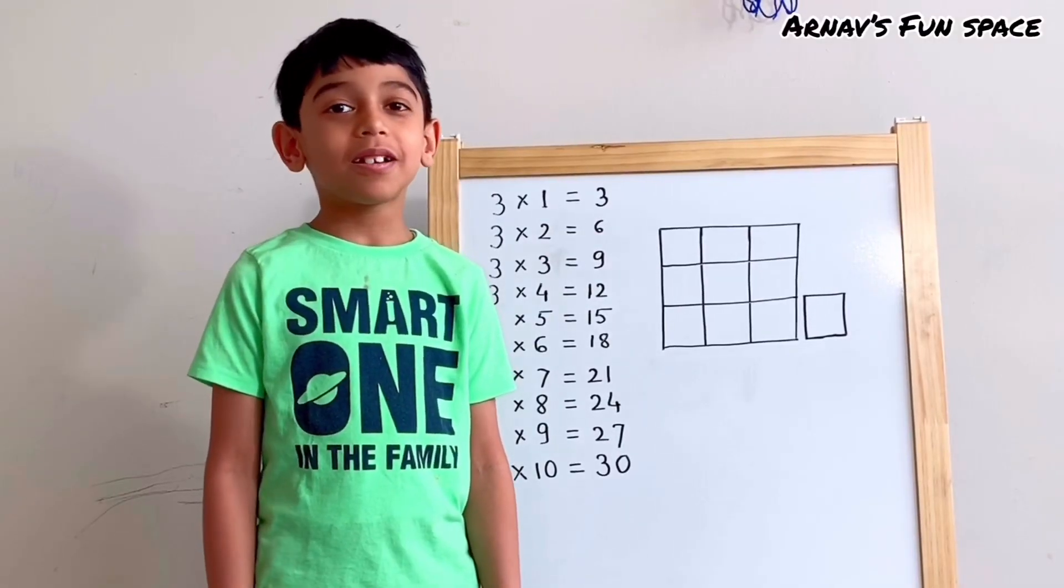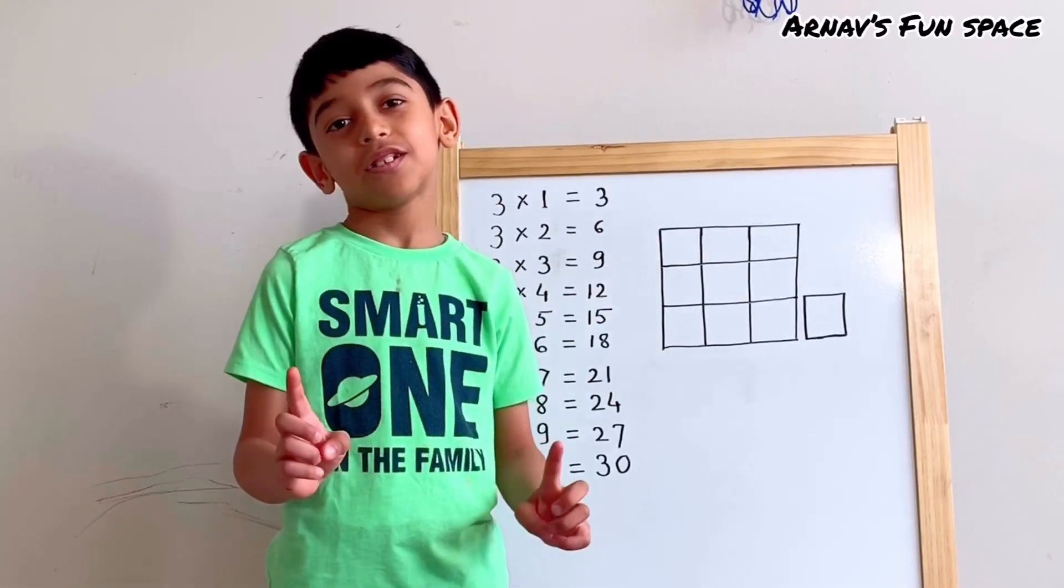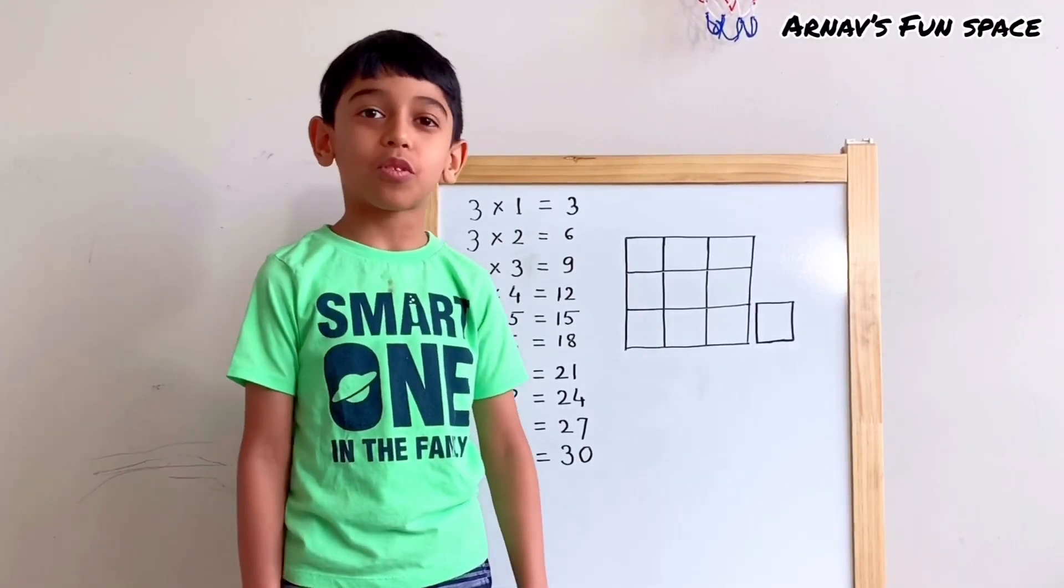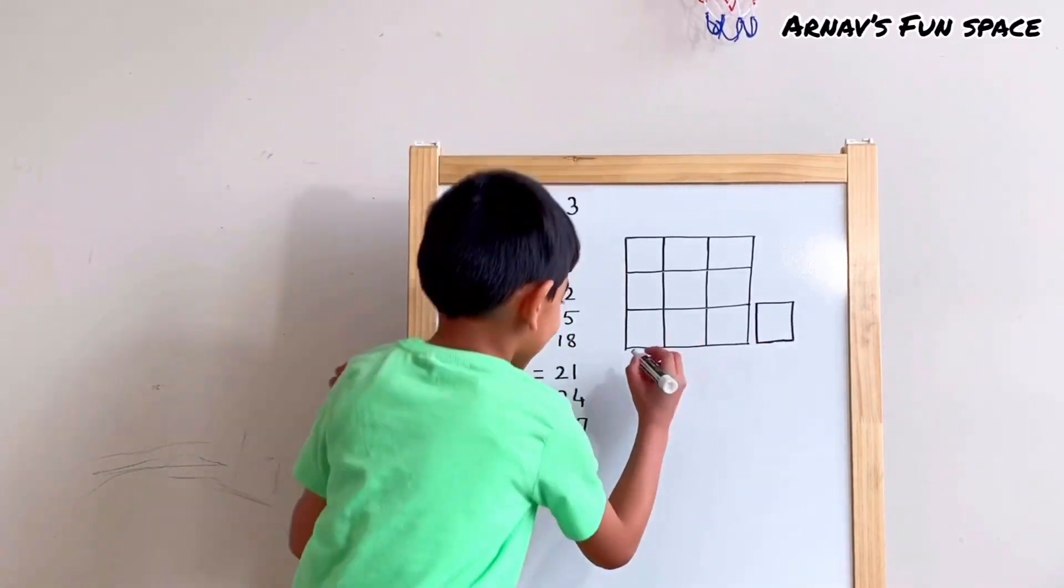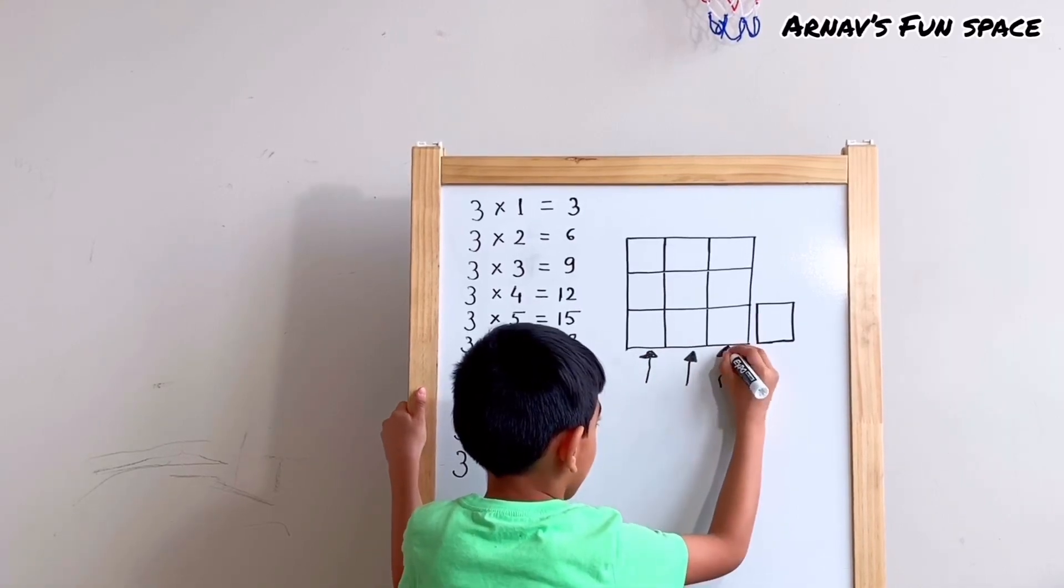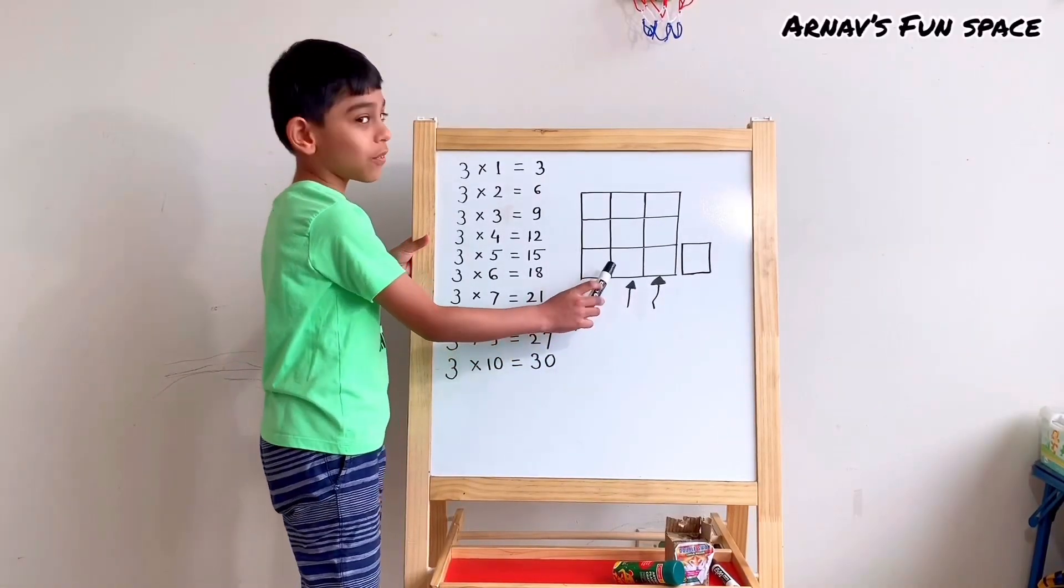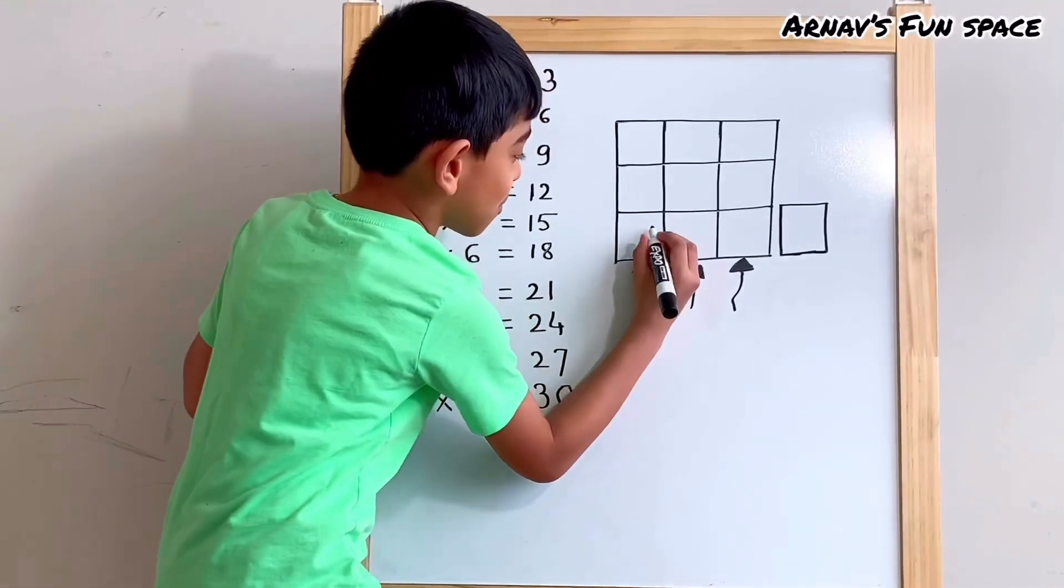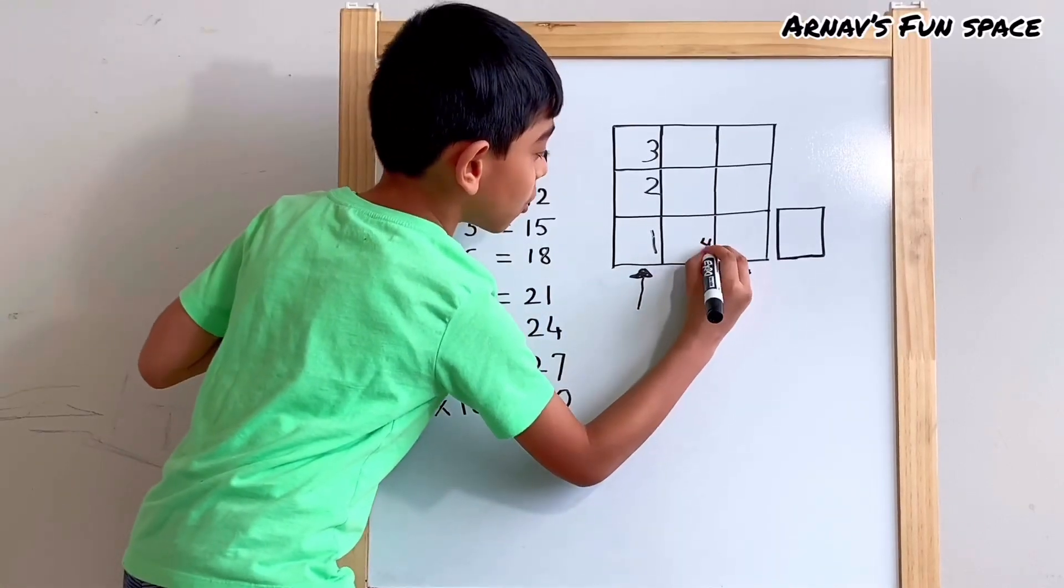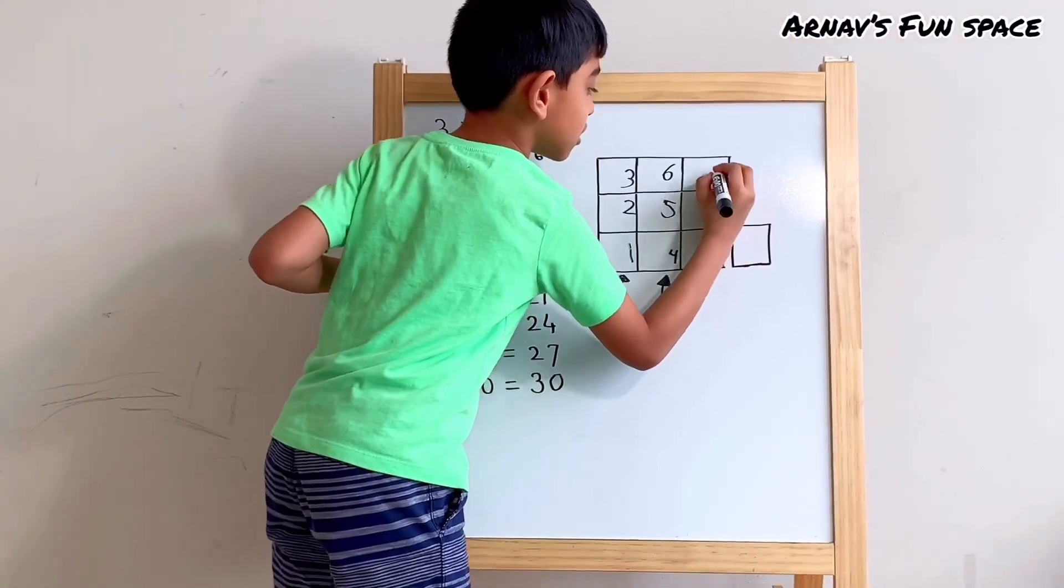Now I'm going to write the 3's table on this chart with a small trick. Watch it carefully. Don't miss it. Let's write the numbers from 1 to 9 in these rows upward. Now let's write down these numbers in the right side of the boxes. 1, 2, 3, 4, 5, 6, 7, 8, 9.